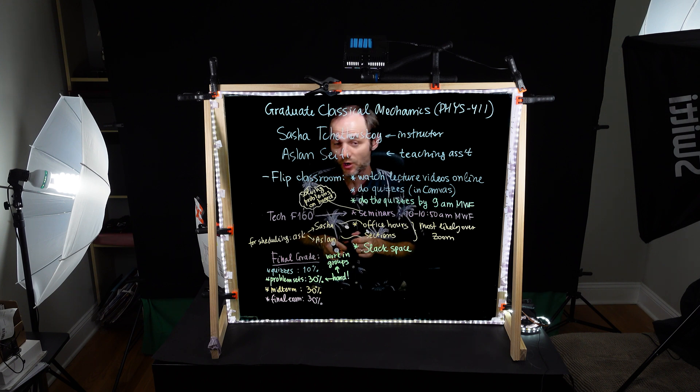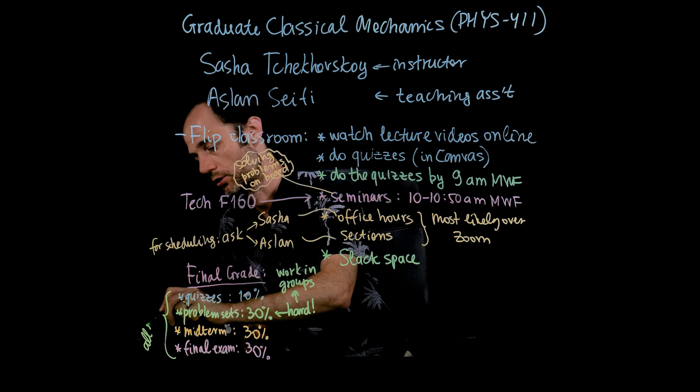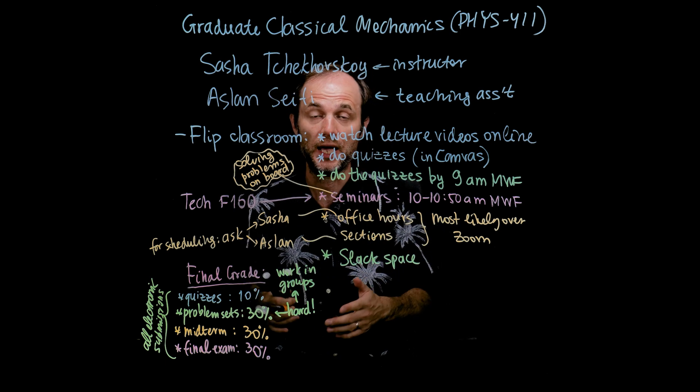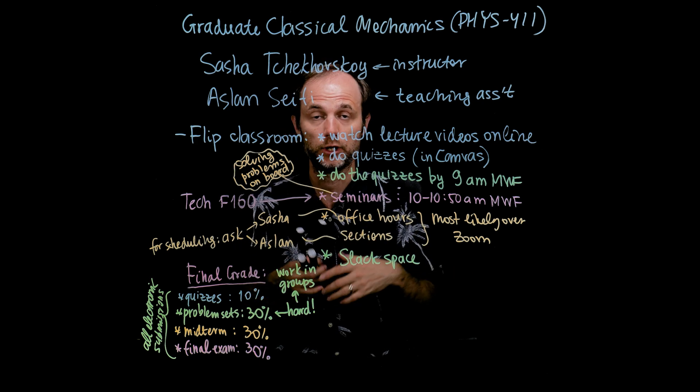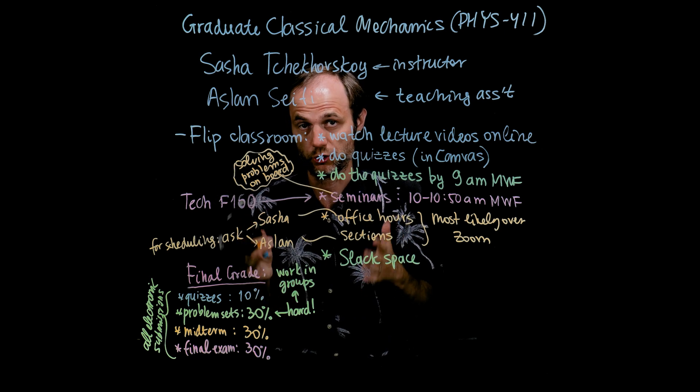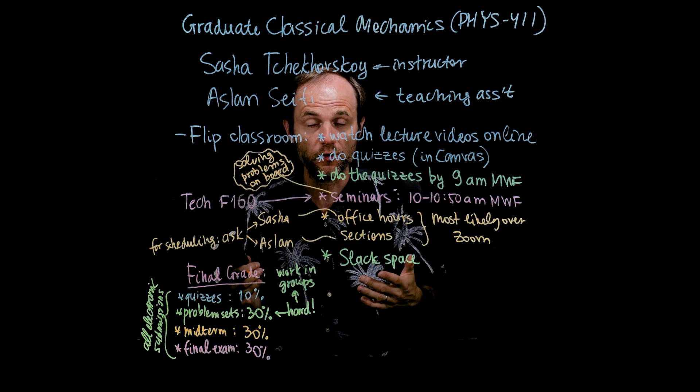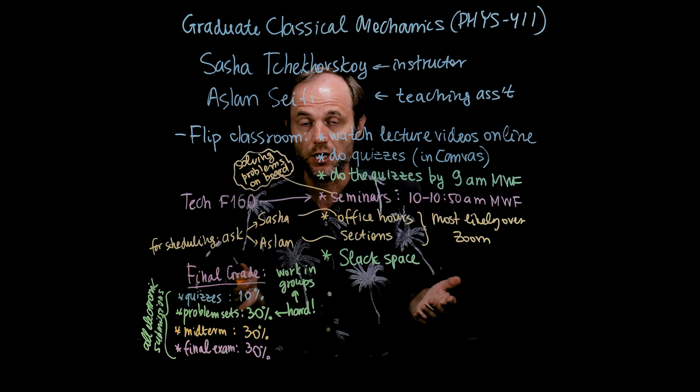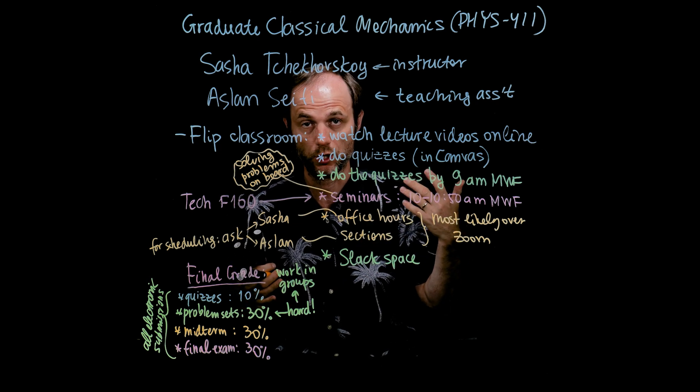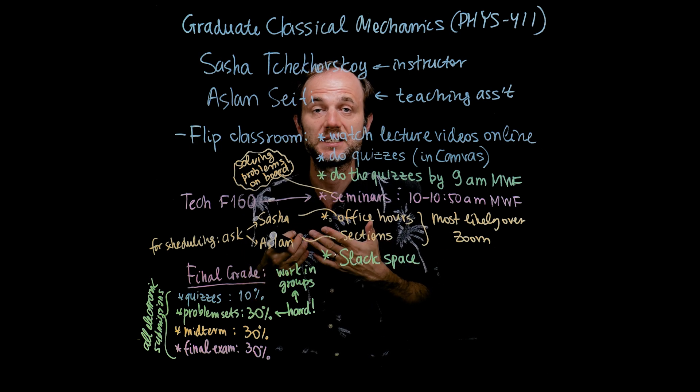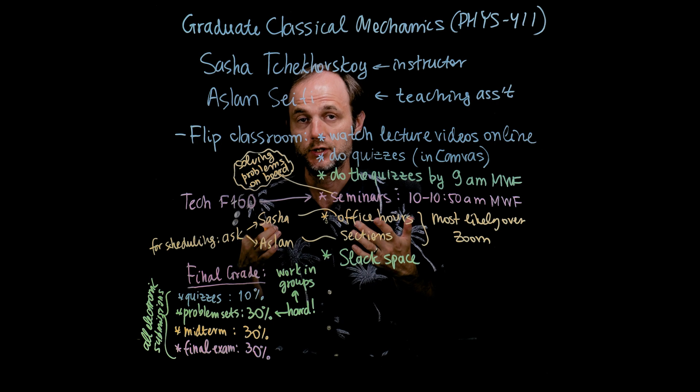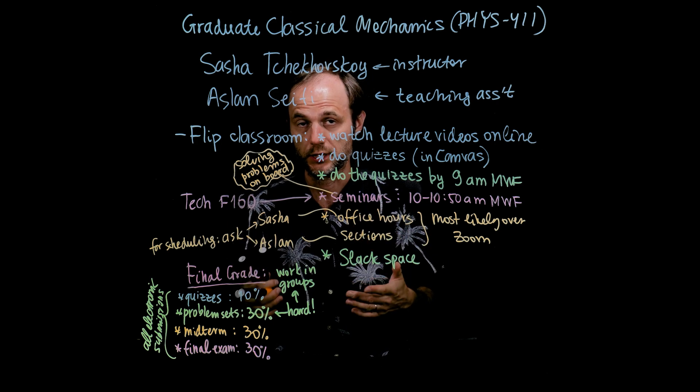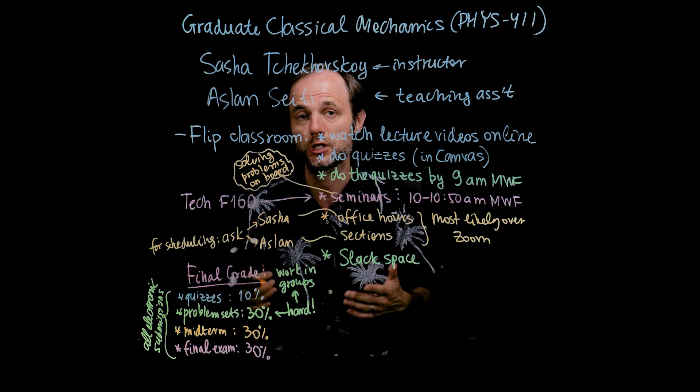So here it's also important that whenever you hand something in, like a problem set, or midterm, or a final exam, everything, all the submissions will be electronic. Please, please, please make sure that they are legible, that Aslan and I can actually read what you wrote. So if you're writing on an iPad or a tablet, please try to make sure that we can understand what's written. If you write on a piece of paper and then take a photograph of that, please use a scanner app of which there are plenty for smartphones. That increases the contrast, makes the background one single color so that the text stands out. That will be very, very thankful for us. And because there are more than 40 of you, it will significantly reduce the workload on both Aslan and I. And we will be very thankful, and hopefully we can be more efficient and helpful to you.